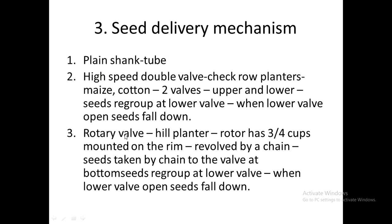The next component is the seed delivery mechanism. In the plain shank type, an ordinary seed tube delivers seeds from the metering device to the outlet. In the high-speed double valve type, there are a top valve and a bottom valve. Seeds fall from the top valve, collect at the bottom, are regrouped according to the quantity needed per furrow opening, and then the lower valve opens to place seeds in the field.